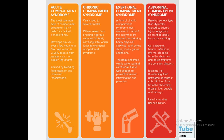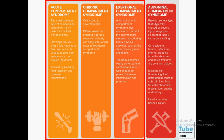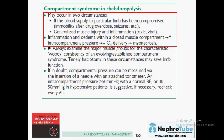Compartment syndrome has two major parts: one is related to skeletal muscles and the other is related to abdominal compartment syndrome. Starting with compartment syndrome in muscles, as mentioned in the rhabdomyolysis part of the Oxford Handbook, compartment syndrome mainly means there is increased pressure inside the muscle or inside any compartment.